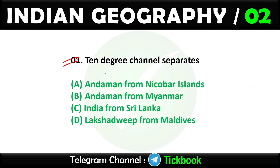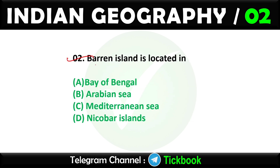Question number one: The 10 Degree Channel separates. Option number A is the right answer: Andaman from Nicobar Island. Question number two: Barren Island is located in. Option number D is the right answer: Nicobar Island.